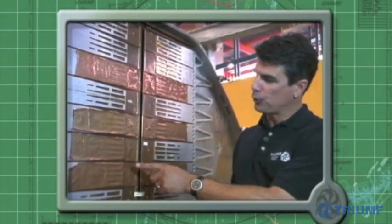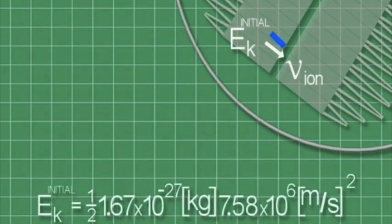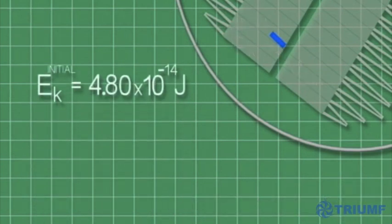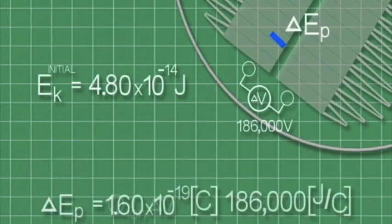Now let's calculate the new energy and velocity of the ions after they cross the cyclotron gap once again. Let's begin by calculating the initial kinetic energy before it crosses the gap. Substituting in the known values for the ion's mass and velocity, we get our result. Now let's add the potential energy from a 186,000 volt potential difference across the gap. Plugging in the known value of the ion's charge and the potential difference, we determine our result.